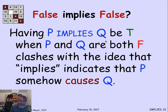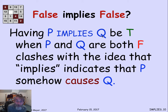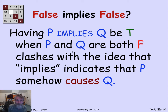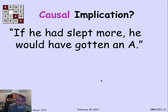This does clash with the intuitive idea that if you say P implies Q, you often think that P is a cause of Q, that P has something to do with Q. And that's not at all the mathematical meaning. The case where you think something causal might be happening is if P and Q are both false, and you might want to have the truth or falsehood of the implication depend on causality. Let's look at an example of that.